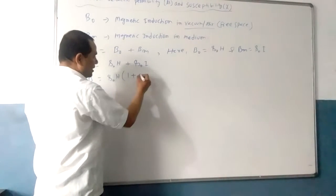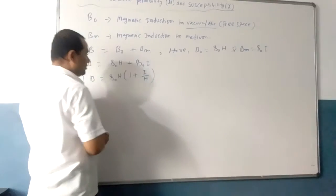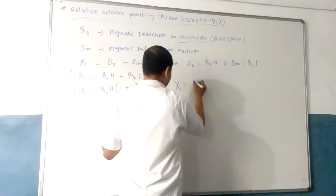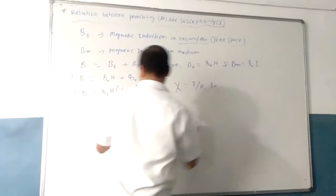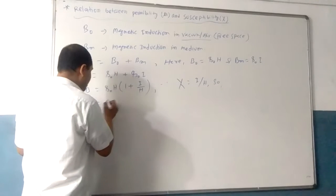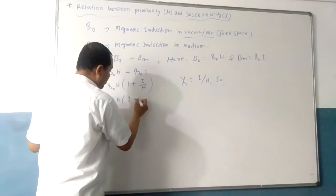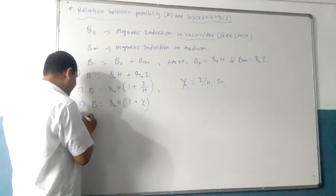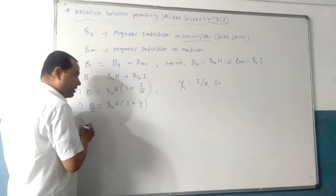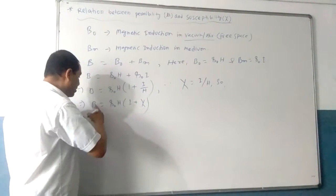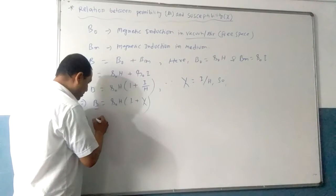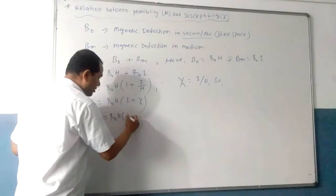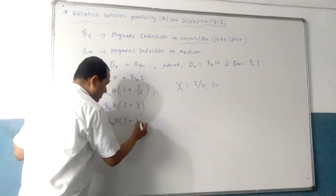You can see that magnetic susceptibility χ is equal to I divided by H, so I equals χ·H. Substituting, B is equal to μ0·H into (1 plus χ), where χ is the magnetic susceptibility.